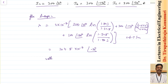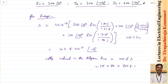The voltage induced in the telephone line is 2πf times lambda. This equals 2π × 50 × 304.5×10⁻⁷, which gives 9.57×10⁻³ volts per meter. So per unit length you are getting 9.57×10⁻³ volts per meter induced in the telephone line.